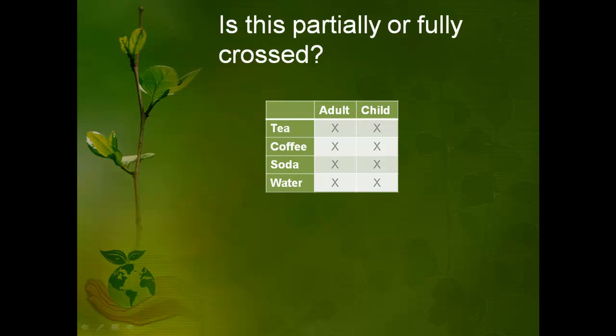So unpause the video when you think you have this. This is fully crossed because you have every combination of each level of both independent variables.